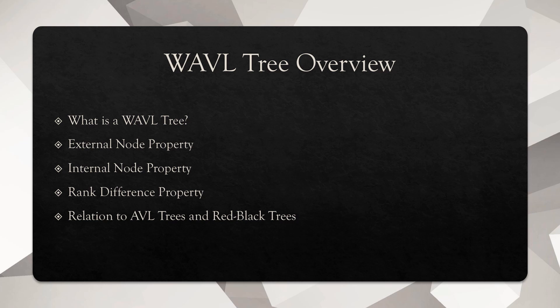To give an overview of what I'll be talking about in this video: I'm going to tell you what a Waffle Tree is and a little bit about its history. Then I'm going to talk about different properties of a Waffle Tree — the external node property, internal node property, and rank difference property. If you see a binary search tree that satisfies these three properties, it is considered to be a Waffle Tree. And then I'm going to talk about the Waffle Tree data structure's relation to AVL trees and red-black trees.